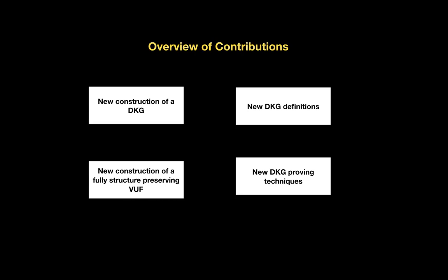We have also presented some new DKG definitions. Generally speaking, they are a hard thing to define because you have to talk about how key generation might work, despite the fact that you don't necessarily know what scheme the key is going to be used in. We also look into the proving techniques used in DKGs and find a way to show that our DKG is secure despite having only one round of communication and a non-fully-random output, allowing us to come up with a more efficient construction.